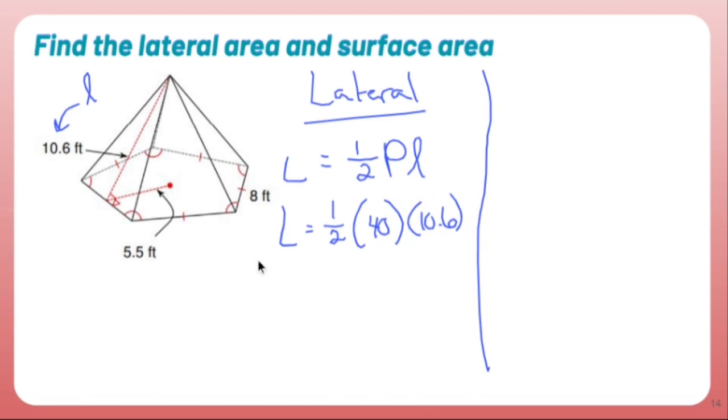The slant height is 10.6. So to find the lateral area, I'm going to do one half times 40 times 10.6, which is 212, right? Because 20 times, yep. Feet squared because of area being square units.